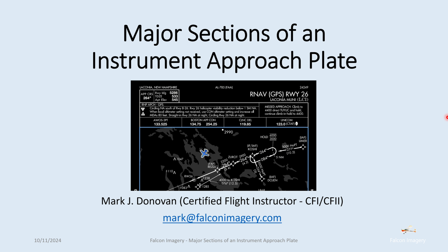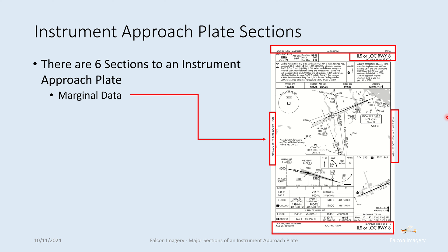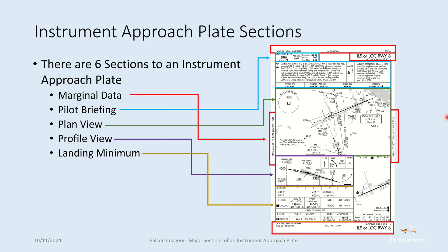Major sections of an instrument approach plate. There are six sections associated with an instrument approach plate. We first have the marginal data, which is near the top and on the sides as well as on the bottom. We have the pilot briefing area, which is again near the top. We have the plan view in the middle, the profile view below that, the landing minimums below the profile view, and lastly the airport diagram section. Now we're going to go deep into each one of these six sections.